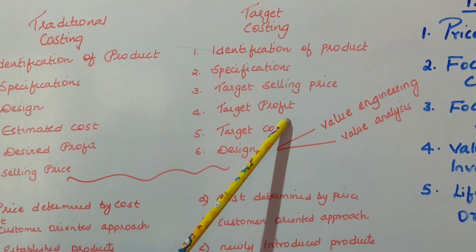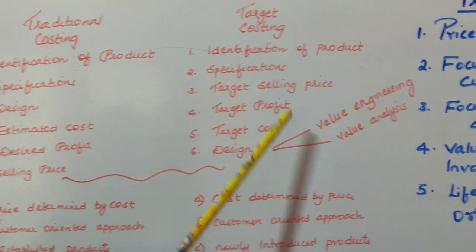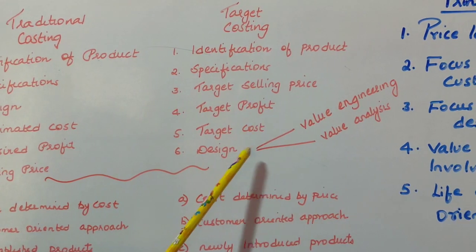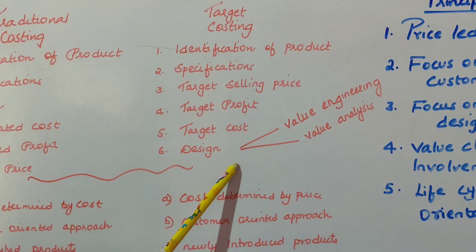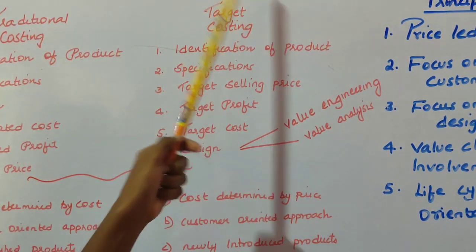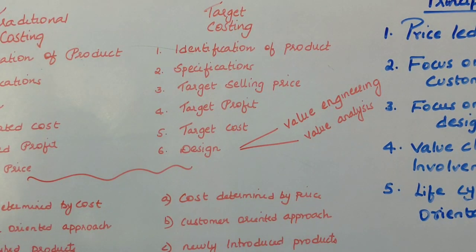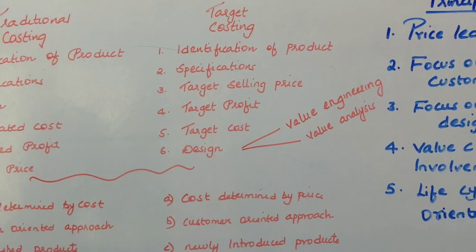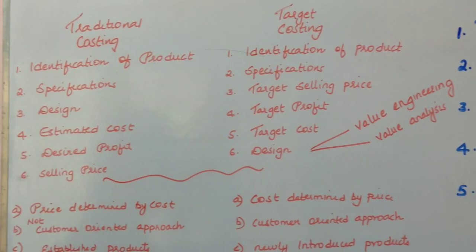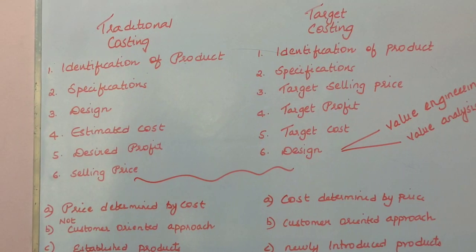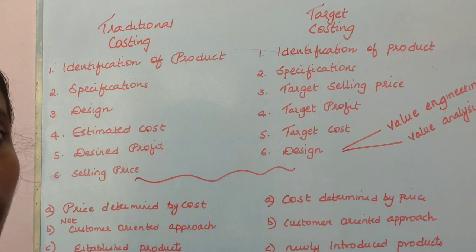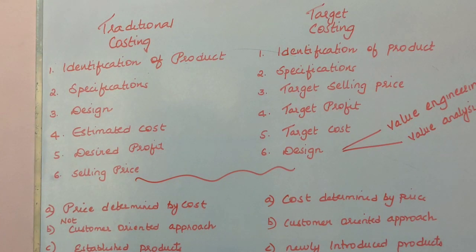Based on this target cost, the design team is called and they are asked to manufacture the product. This is termed as target costing. So target costing means it is a method of costing the product from the point of view of the customer.